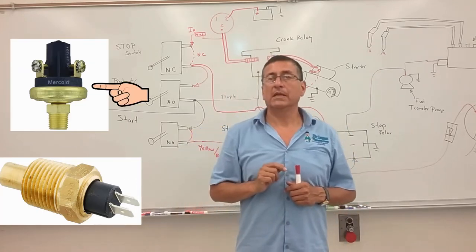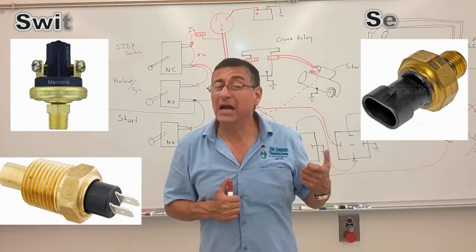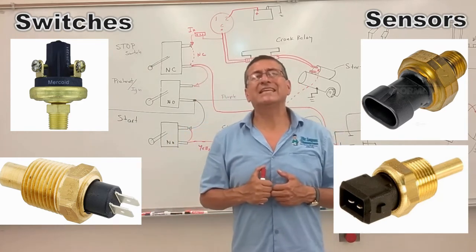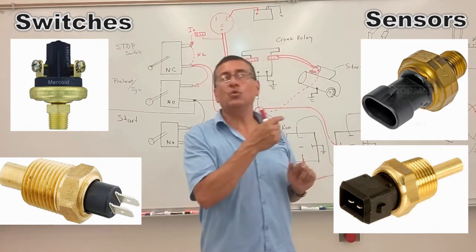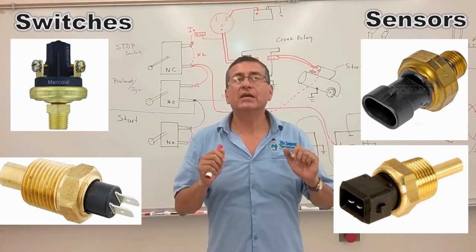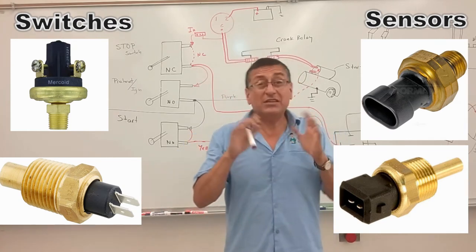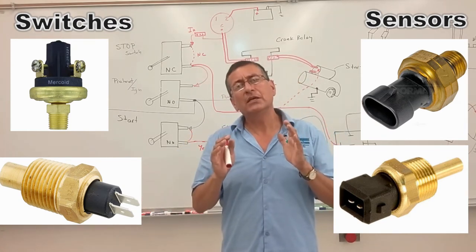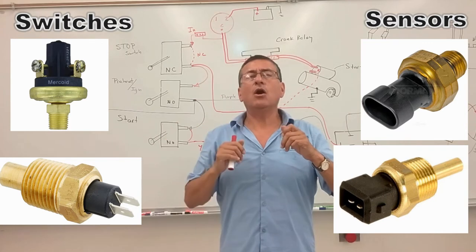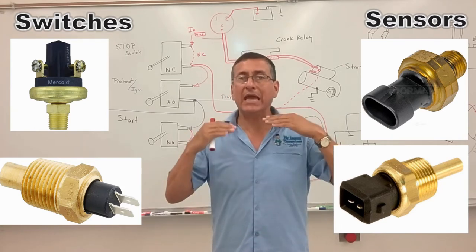So they are different and we are going to use both of them in this diagram today. The switch is used to interrupt the purple cable and stop the engine. The switch is a normally closed switch that only opens in an emergency — when the temperature passes the limit or when the oil pressure decreases below the limit. Those are the switches to kill the engine, to stop.